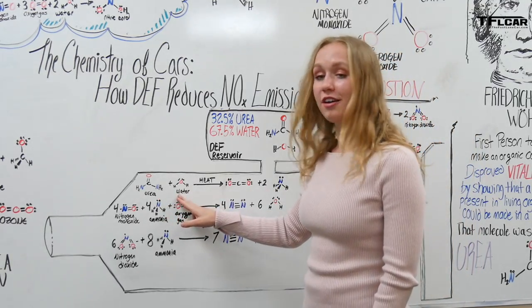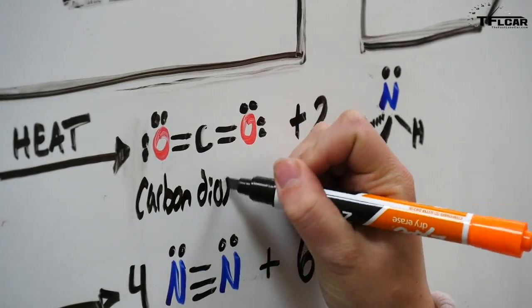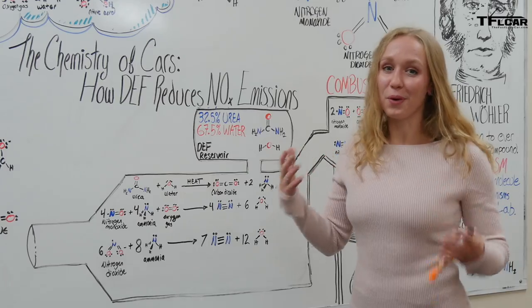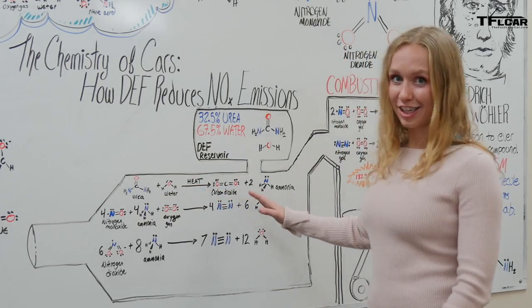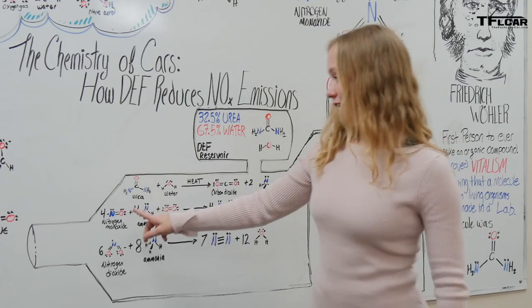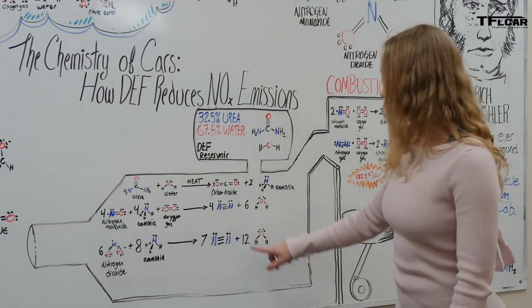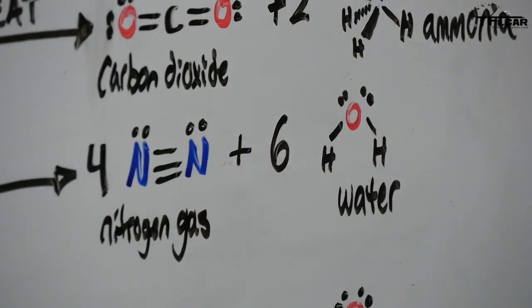The urea and water react with the catalyst of heat to produce carbon dioxide and ammonia. The important part of this whole first reaction is the production of ammonia. So ammonia then reacts with nitrogen monoxide and oxygen gas to produce nitrogen gas and water.